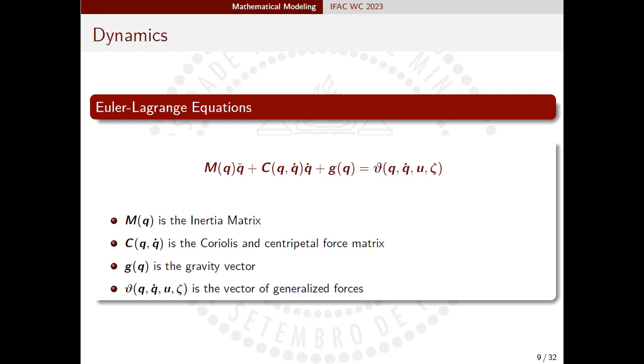From the total kinetic and potential energies of the mechanical system, the quad-CP VTOL UAV equations of motion are written in the Euler-Lagrange canonical form as shown. Here, M is the inertia matrix, C the Coriolis and centripetal forces matrix, G the gravity vector, and var theta represents the generalized forces vector.